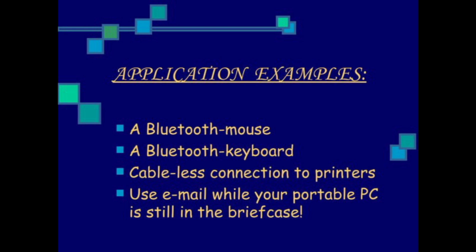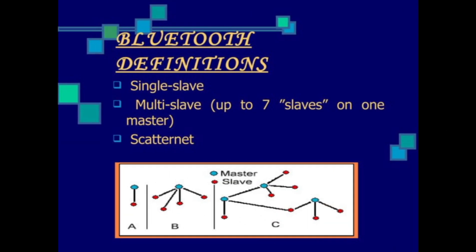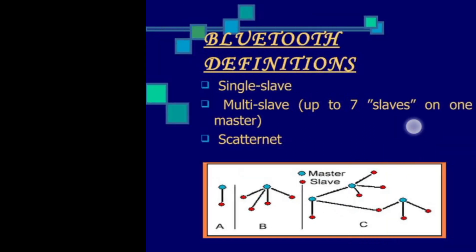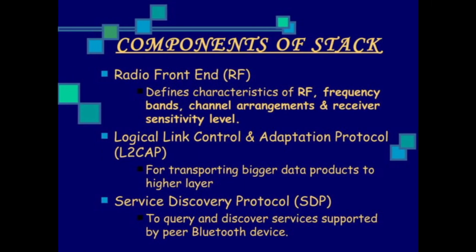Bluetooth definitions: single slave, multi-slave — up to seven slaves on one master. The stack component includes a radio front end, called RF, which defines characteristics of RF frequency bands, channels, agreements, and receiver sensitivity.